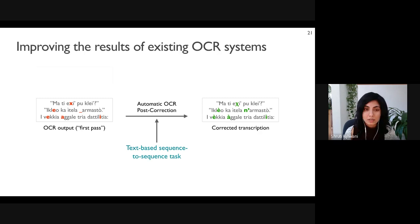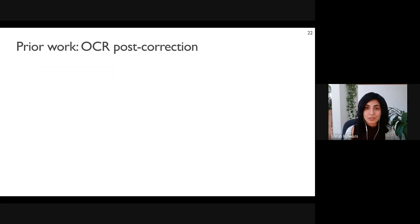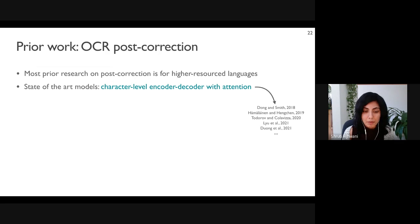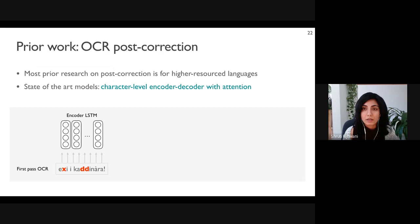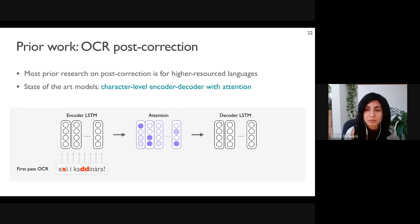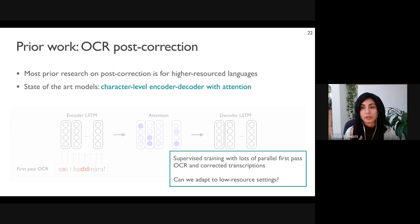The standard setup of post-correction is a text-based sequence-to-sequence task — it doesn't use any visual information. The first-pass OCR is the input text and the corrected transcription is the output. OCR post-correction is well-studied in the high-resource setting, particularly for English. Recent state-of-the-art methods primarily use character-level neural encoder-decoder models, where characters in the first-pass OCR are converted to embeddings, passed to an LSTM encoder, and a decoder LSTM with an attention mechanism generates the corrected transcription at the character level.